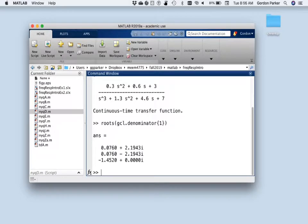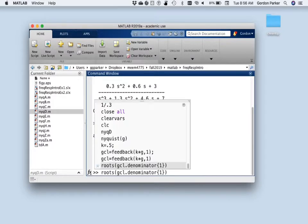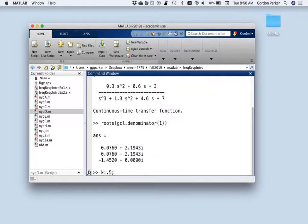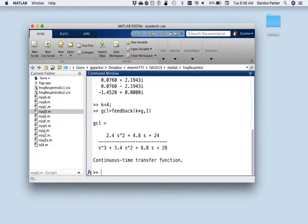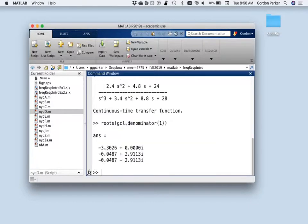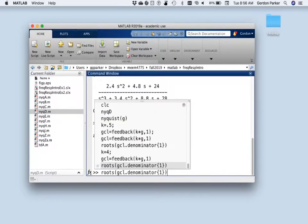Well, now let's check the other side of that. So for K greater than 3.3, so how about we let K equal 4. And we'll just cycle through this again. There's the closed-loop transfer function, and there's the roots. Cool. It's all stable.